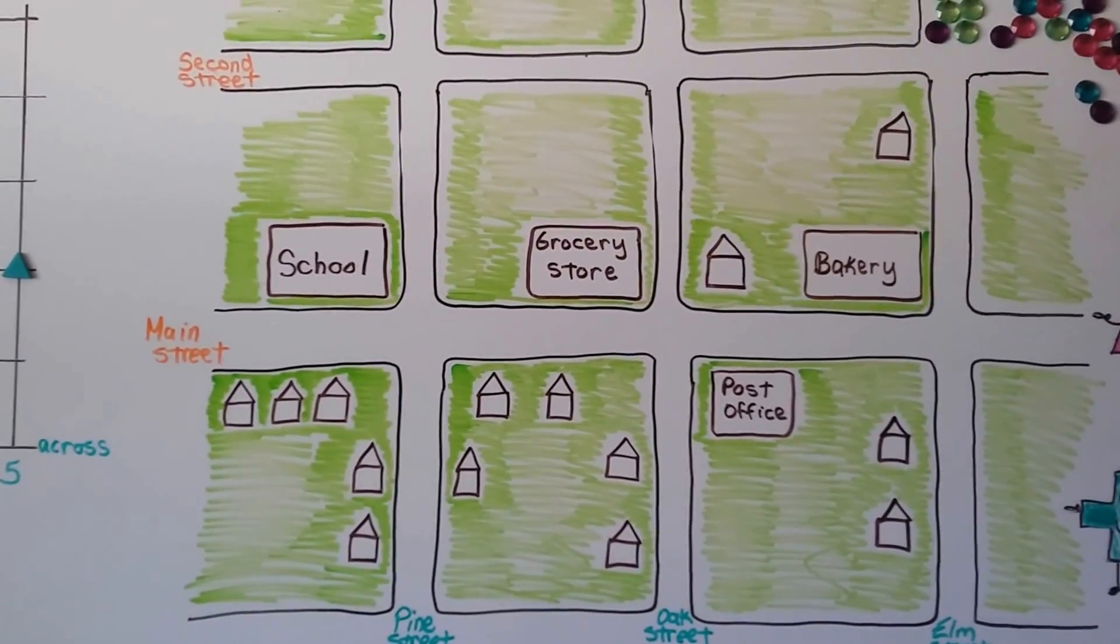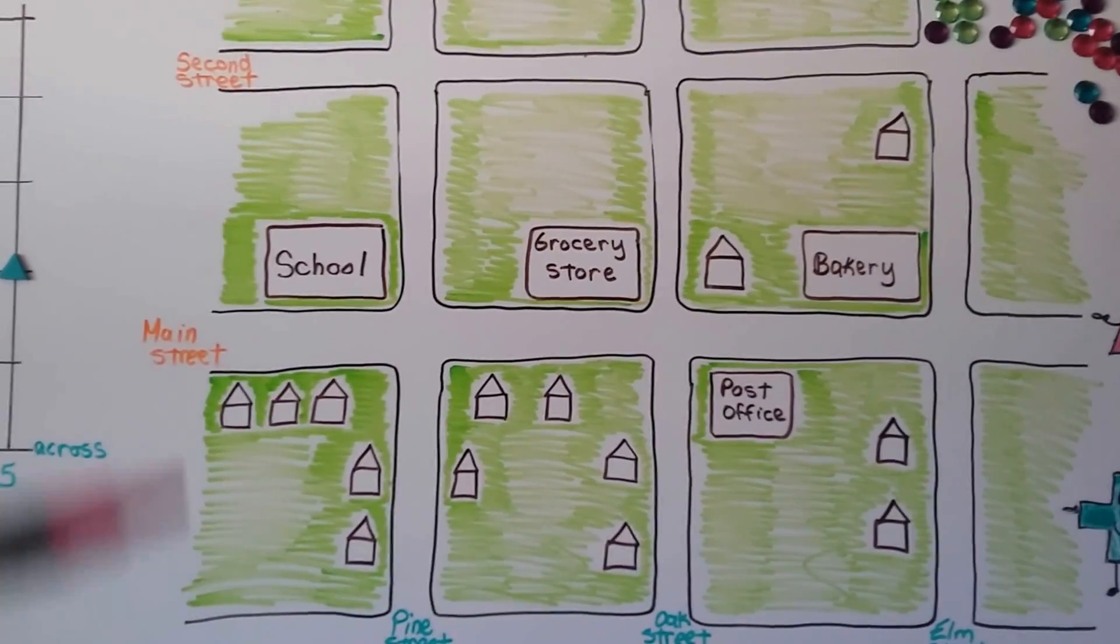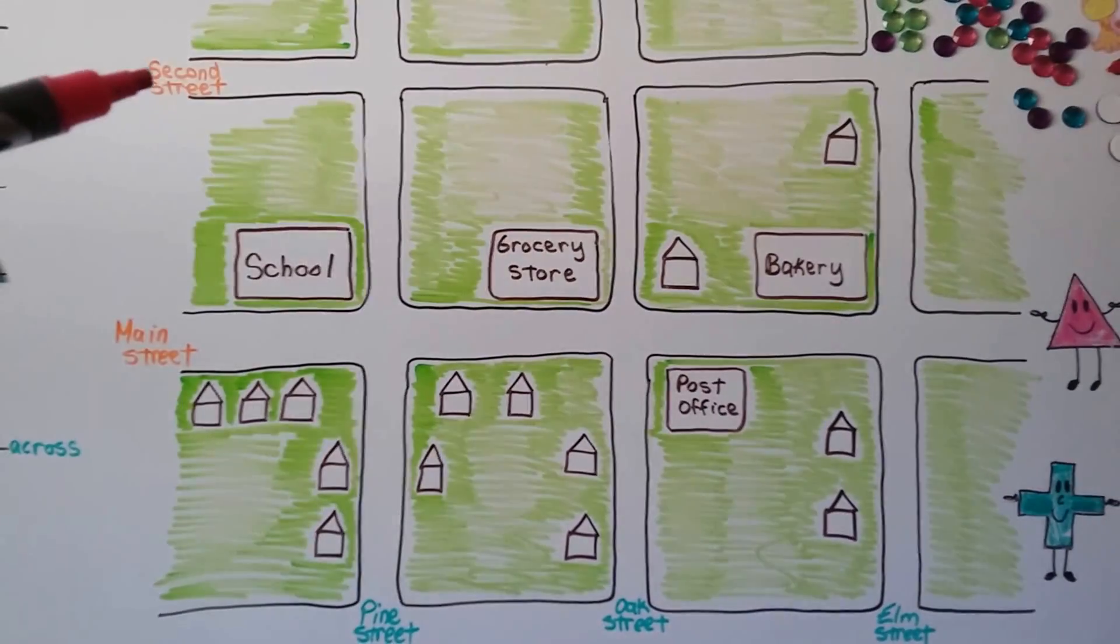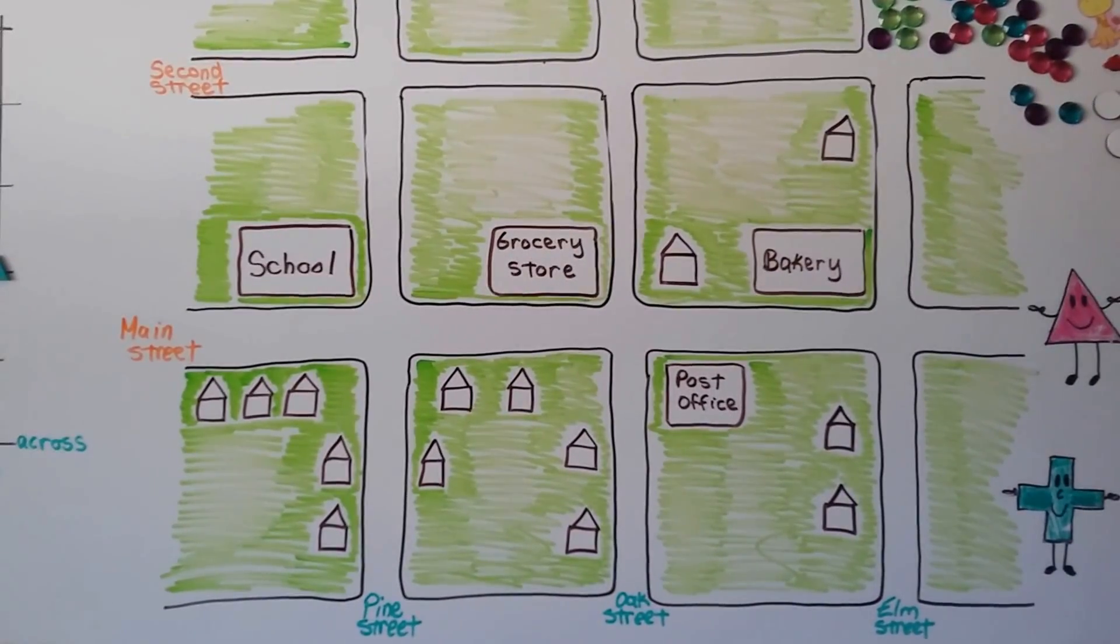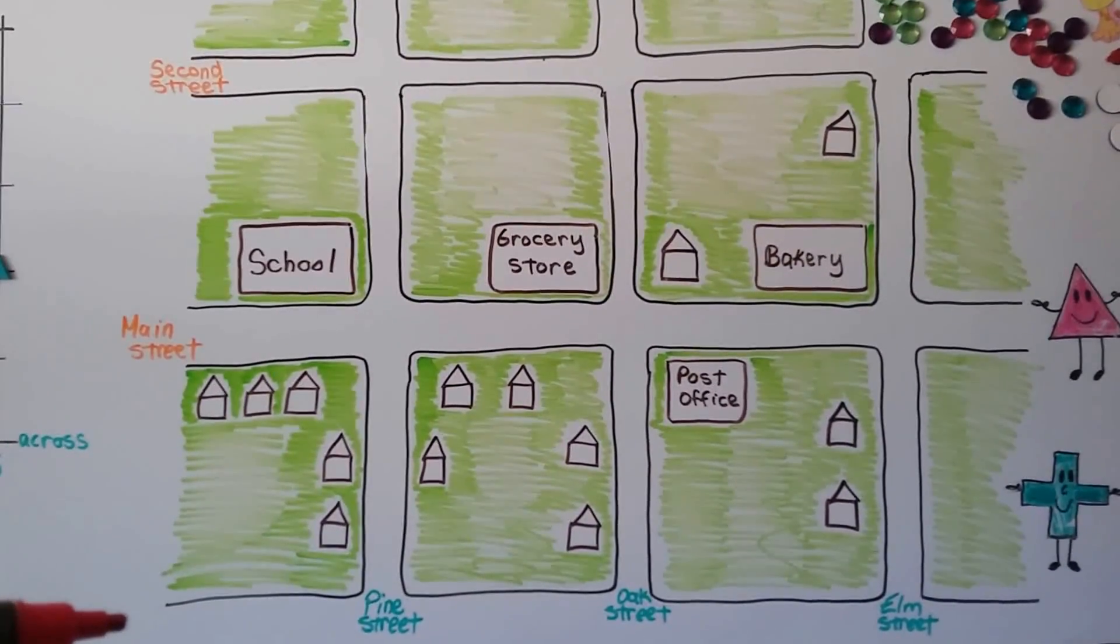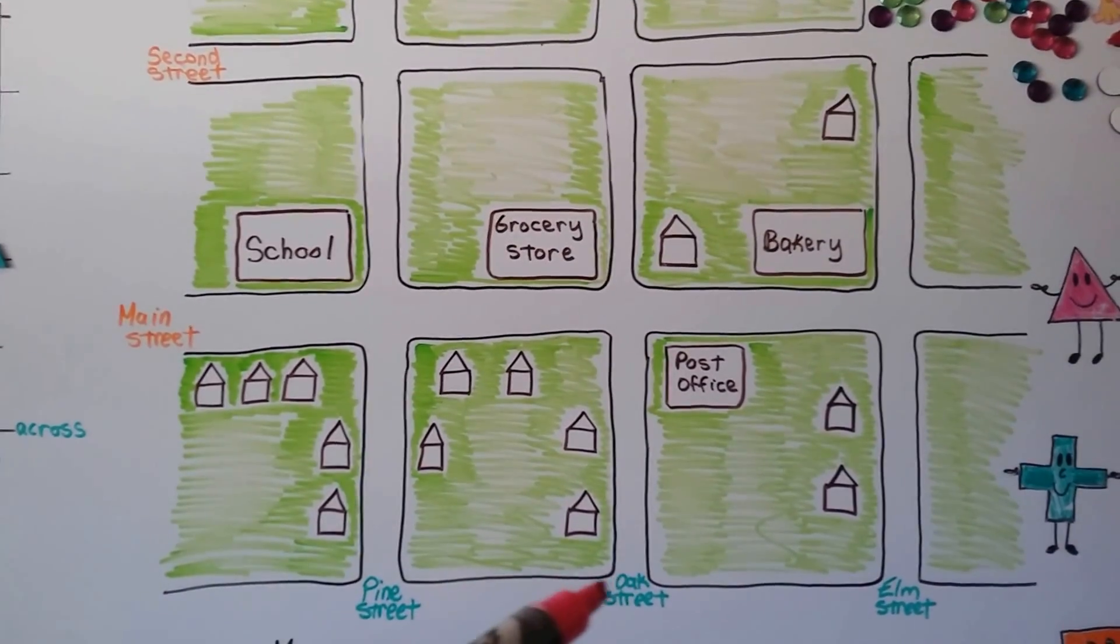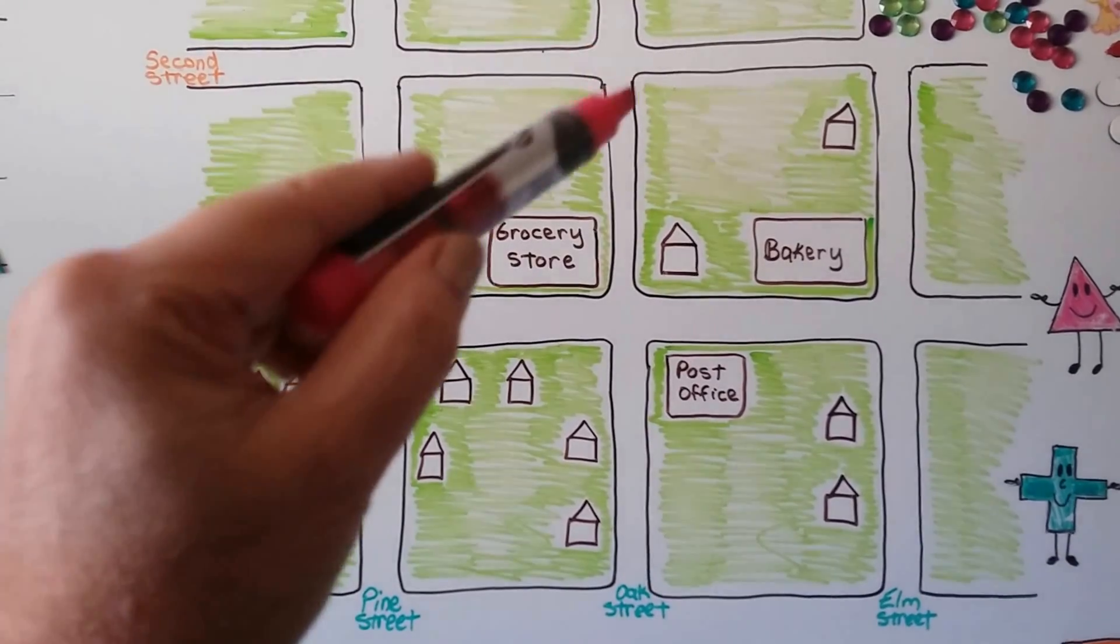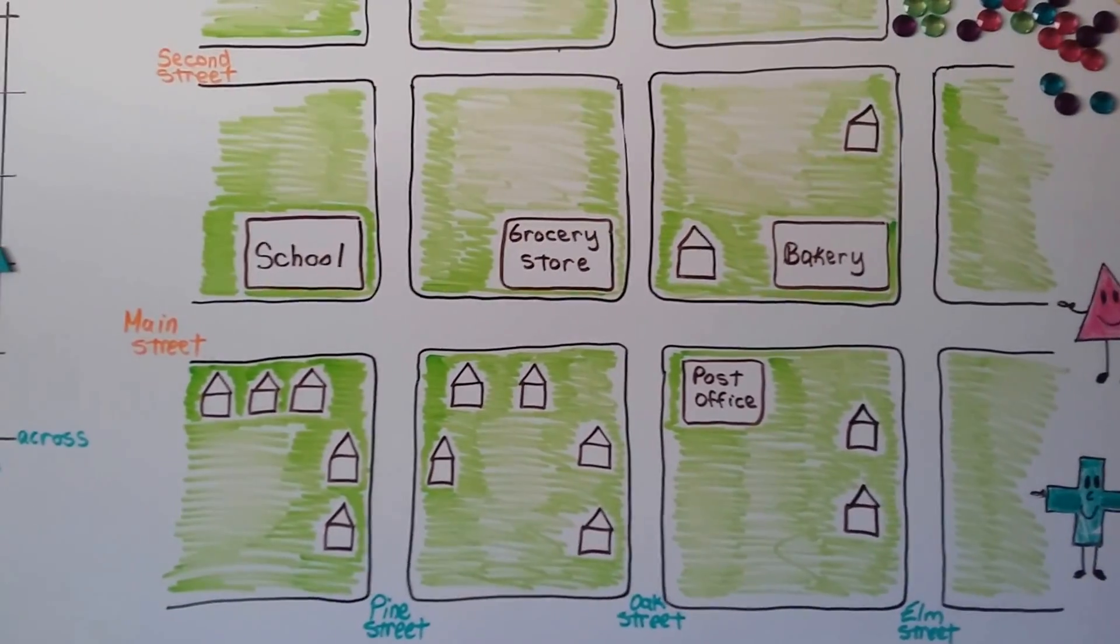If someone said they were going to meet you on 2nd Street, we have no idea where on 2nd Street you are. But if you said I'll meet you at the corner of 2nd Street and Oak Street, we have Oak Street here and here's 2nd Street. So that means you're going to be over here. Maybe there's a playground there or a park.